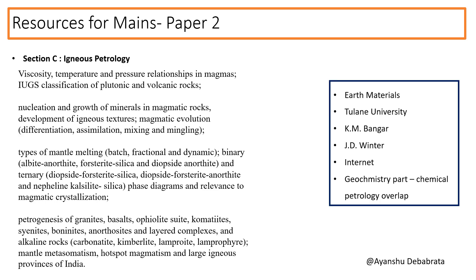For igneous petrology, the syllabus mainly deals with three things: the generation and characteristics of magma, the types of mantle melting, phase diagrams and their relevance to rock formation, and the petrogenesis of different rock types and large igneous provinces. I followed Earth Materials, Jdu Inter, and Tulane University notes, and K.M. Bangar for quick revision. Some geochemistry content — particularly REE diagrams for different rock types — also helps enrich the petrogenesis section.